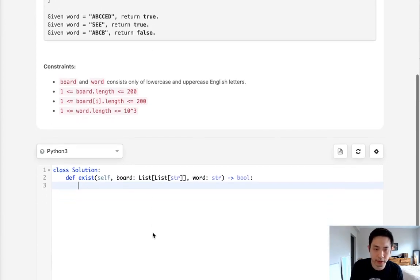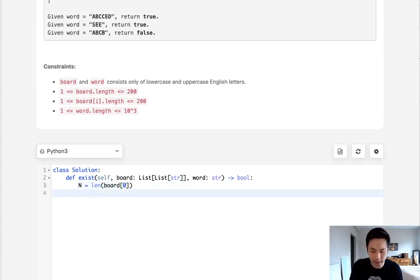Let's start by initializing a couple of variables. We'll start with the width and height. First, the width is going to be equal to the length of board[0]. Now the height is going to be equal to the length of the board.